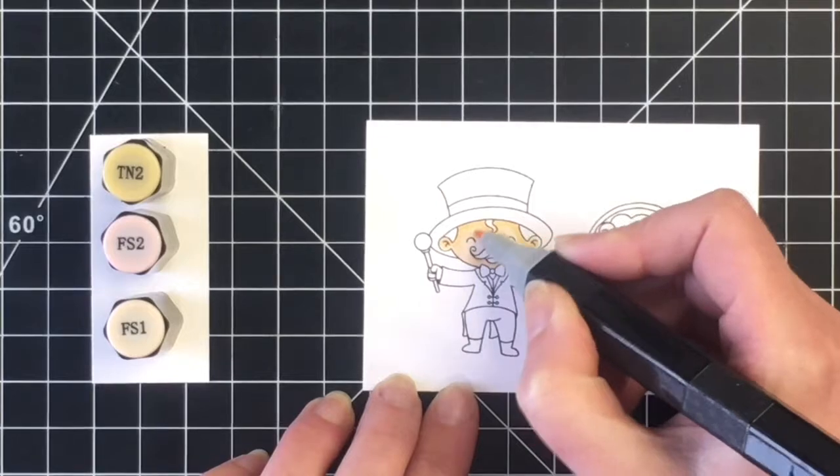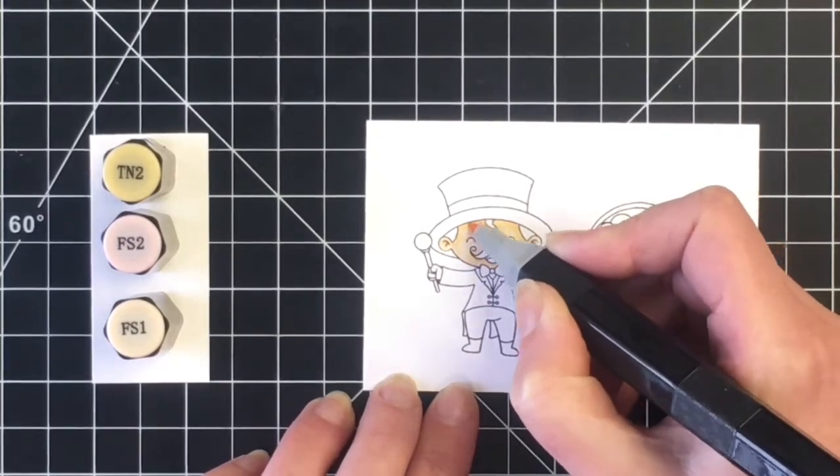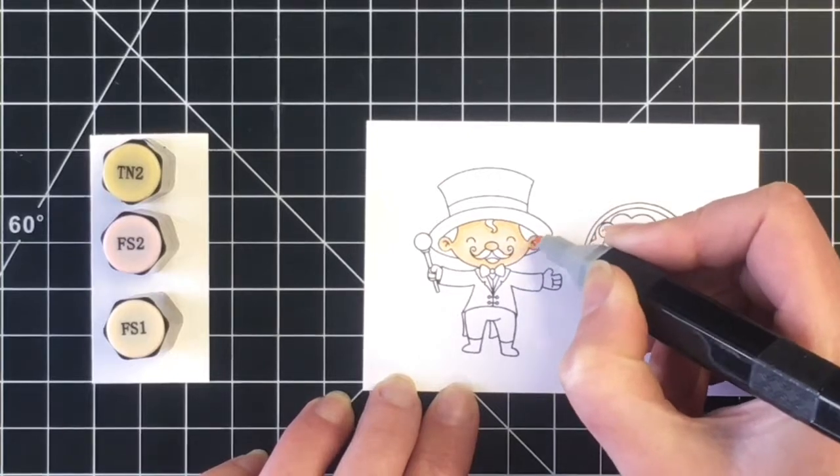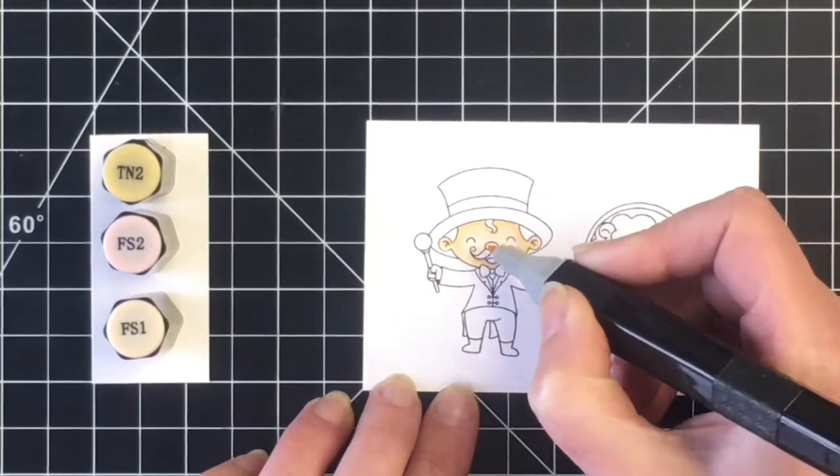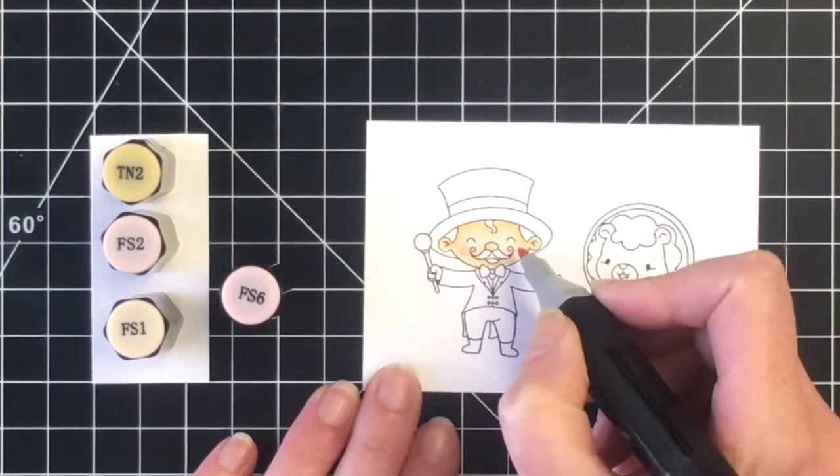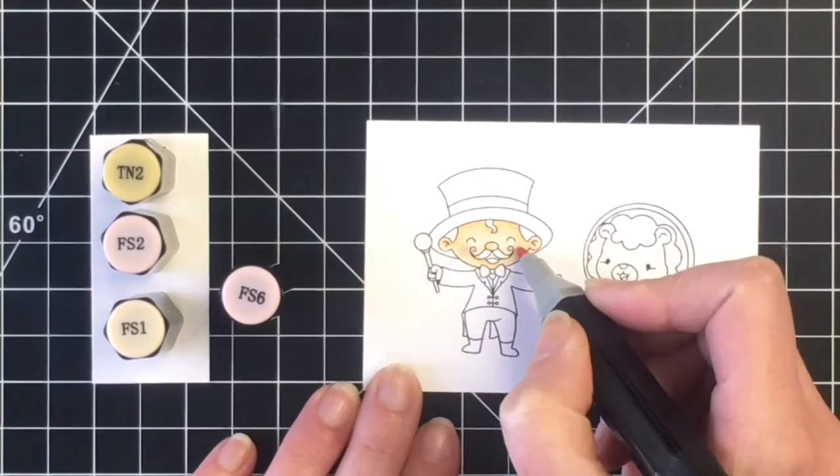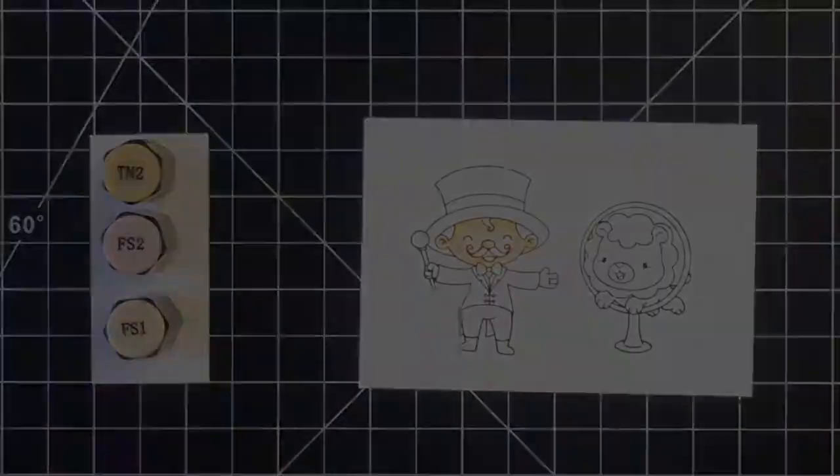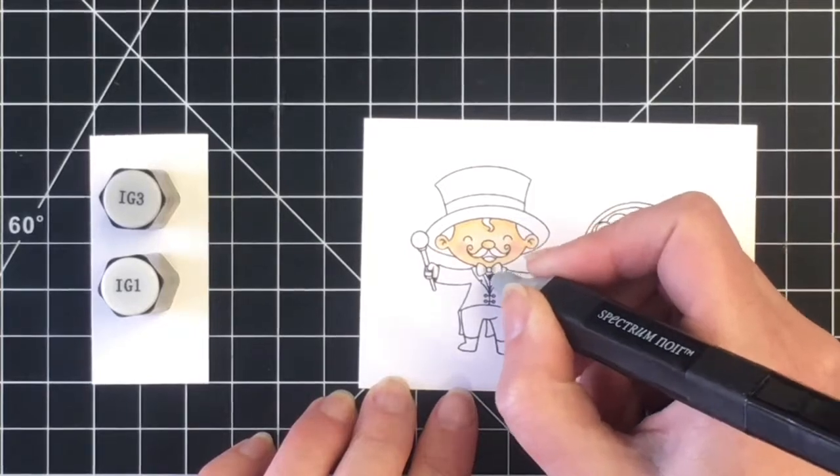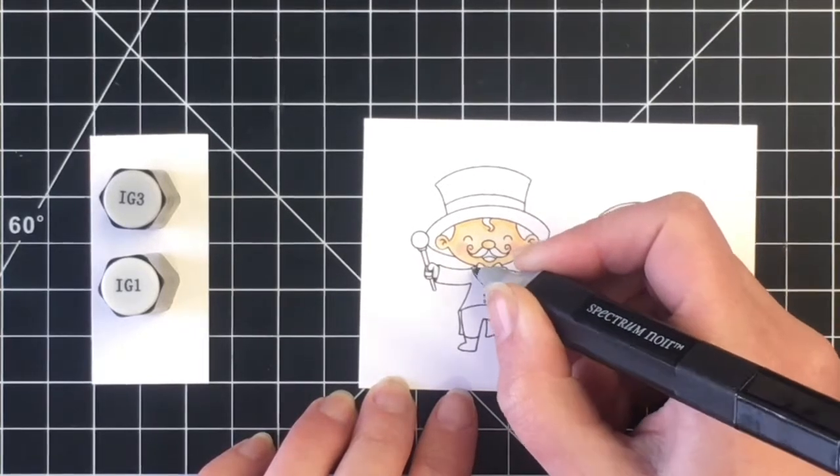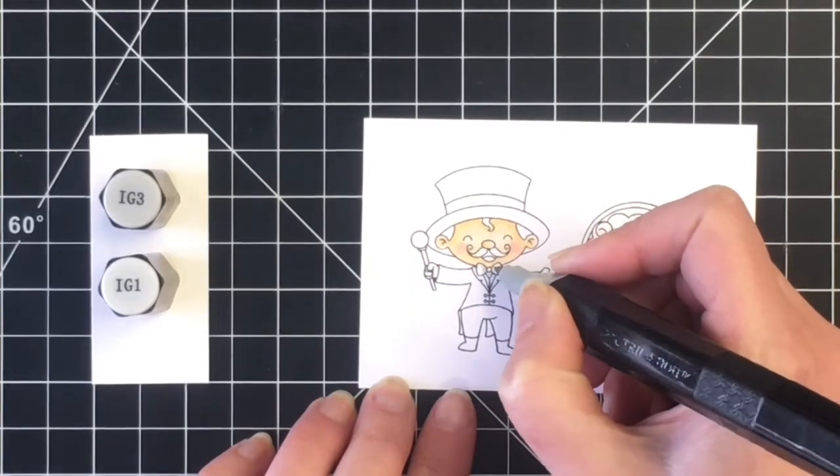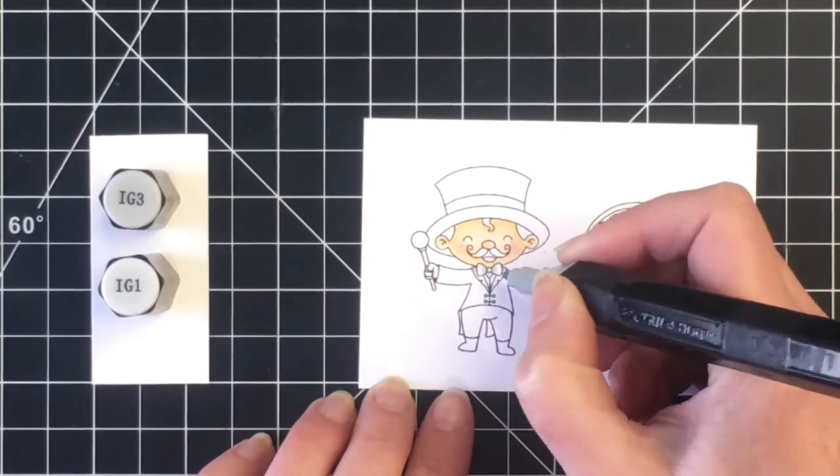For the skin tone I'm using TN2, FS2, and FS1. This is kind of my go-to skin tone when using Spectrum Noirs. I just want to apologize a little bit here for the lighting. For some reason, I didn't do anything different than I normally do, but it's a little bit overexposed. It will kind of stop once I get more color onto the images here.